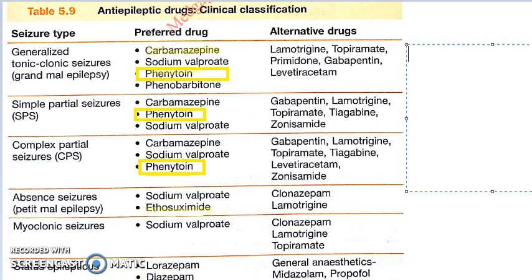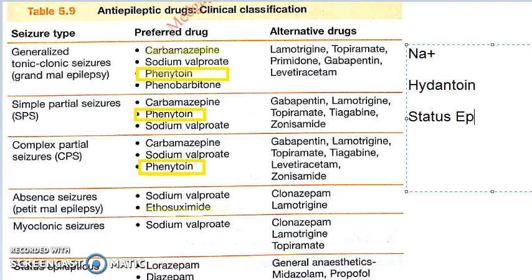So far we learned that phenytoin is going to inactivate sodium channels — prolong the inactivation of sodium channels. It is a hydantoin chemically. It is used for generalized tonic-clonic seizures. For status epilepticus it is the main indication; for everything else it is second line of drug only — like generalized tonic-clonic seizures it is second line, partial seizures or focal seizures it is second line of drug.